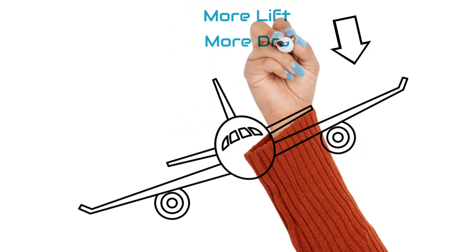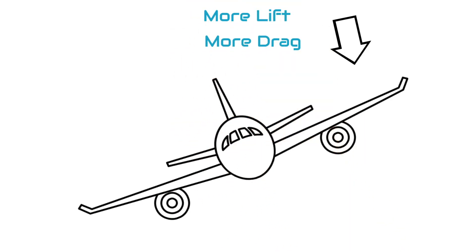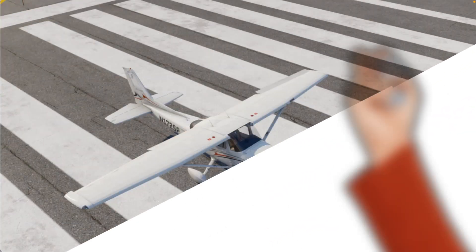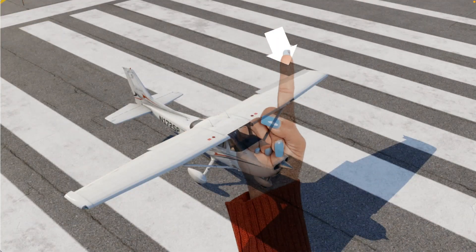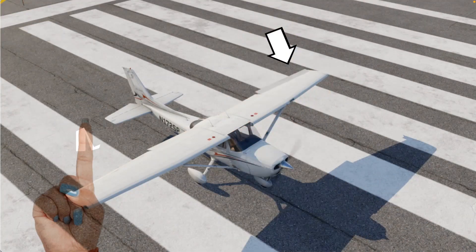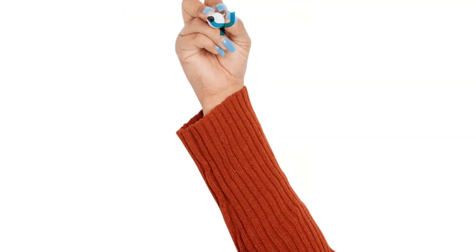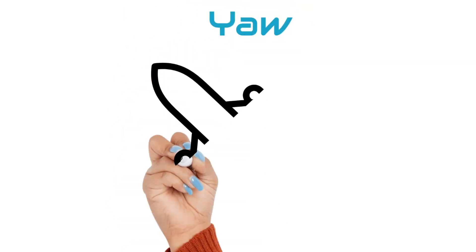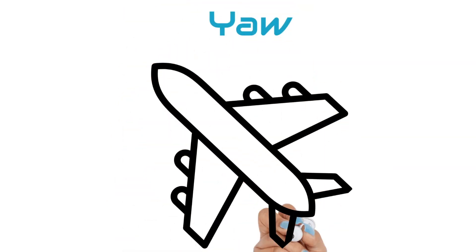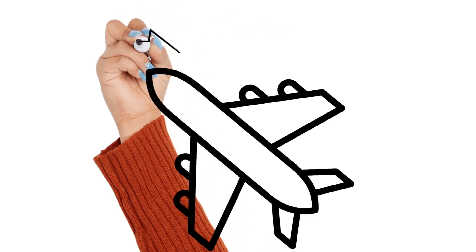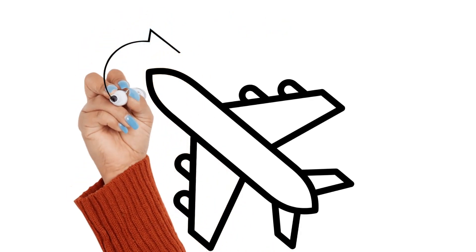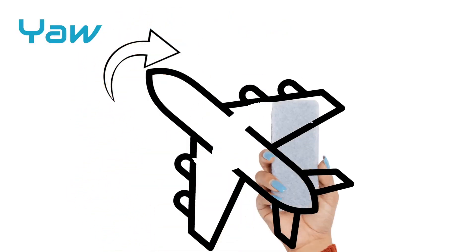This causes what we call adverse yaw, which can happen anytime we use the ailerons. Adverse yaw is the tendency of an airplane to yaw or turn its nose in the opposite direction of the intended turn.